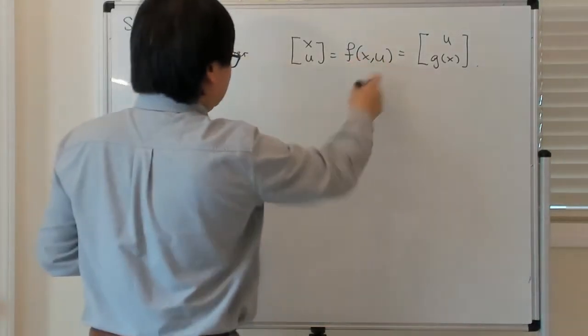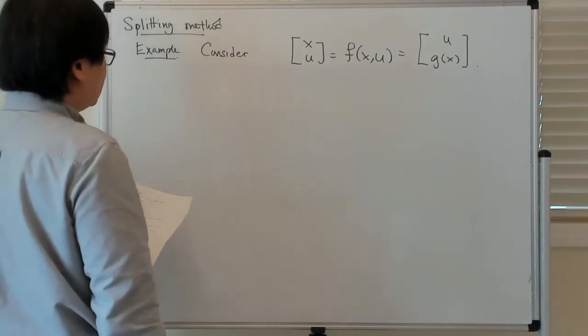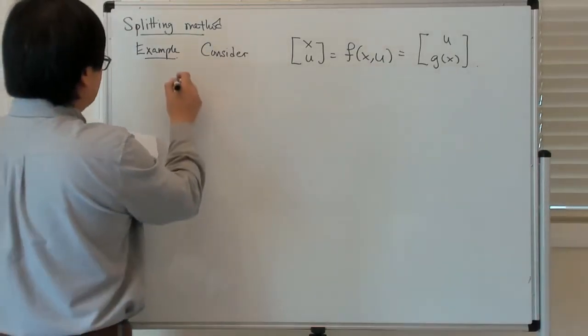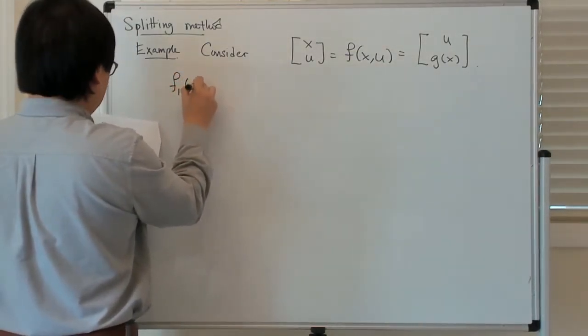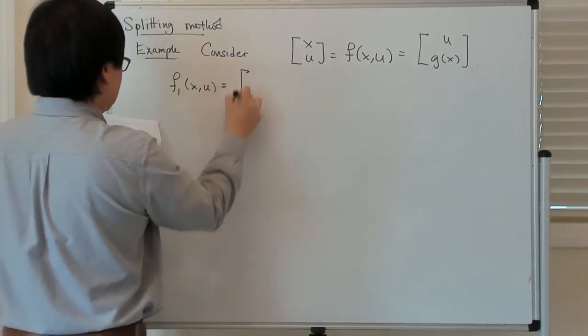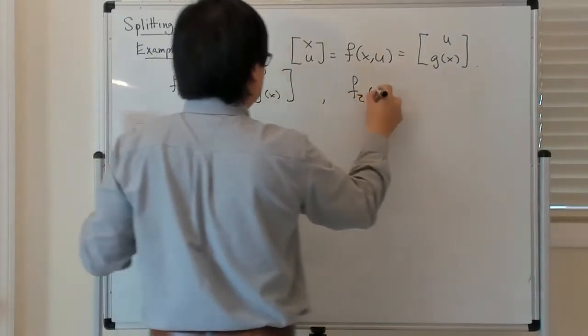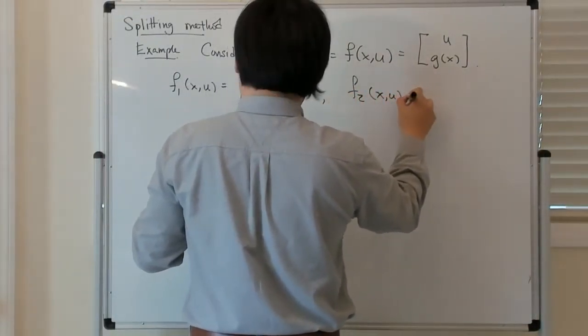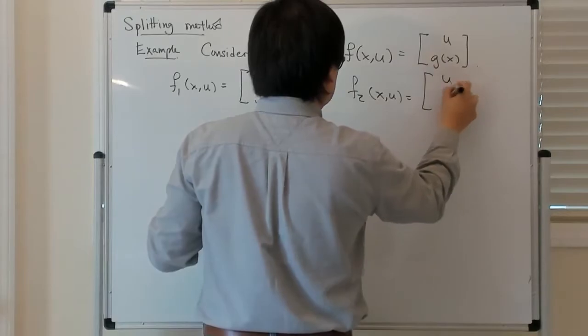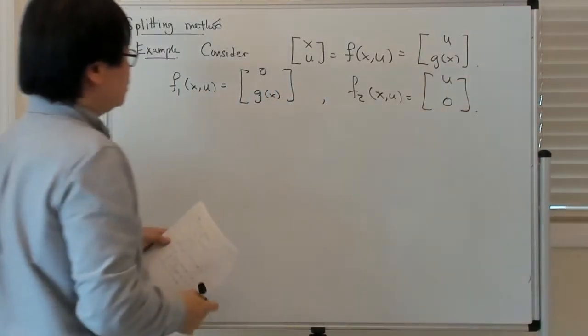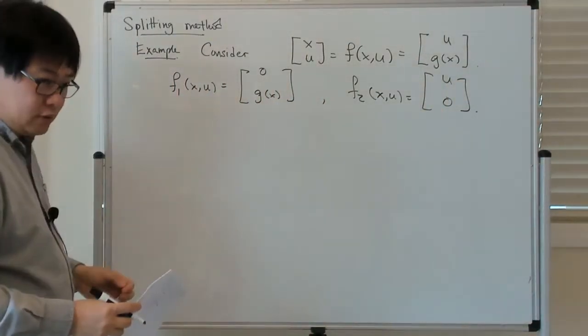So you have the vector field and let's look at a possible decomposition of it. Let's say f1 of x u is 0 g of x, and f2 of x u is u 0. It's easy to convince yourself that f1 plus f2 is equal to f.